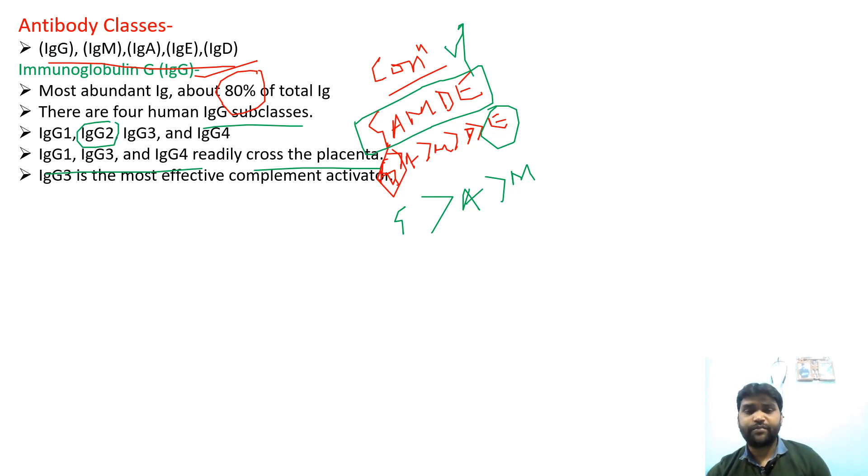I have to tell you that the complement system is a part of your immune system. IgG3 is the most important for activating complement. The most abundant concentration is IgG, and IgG3 is particularly important for complement activation.